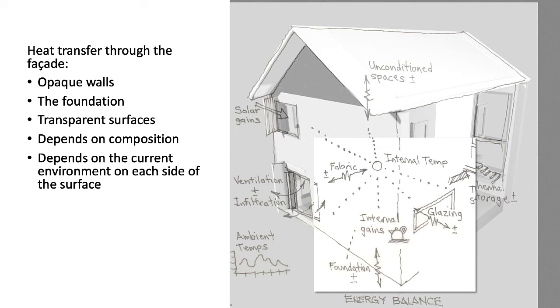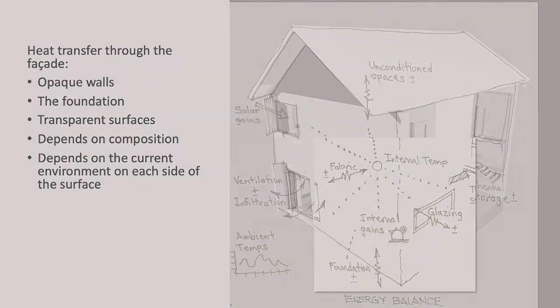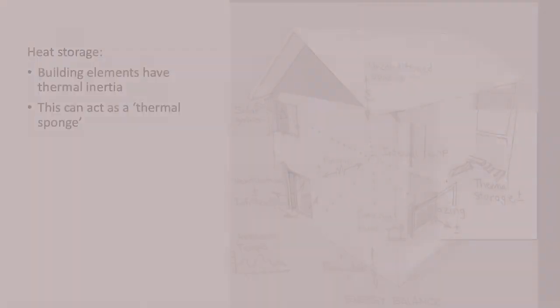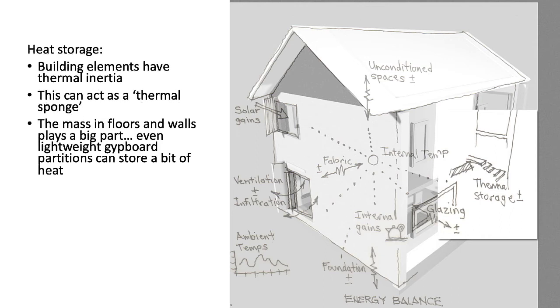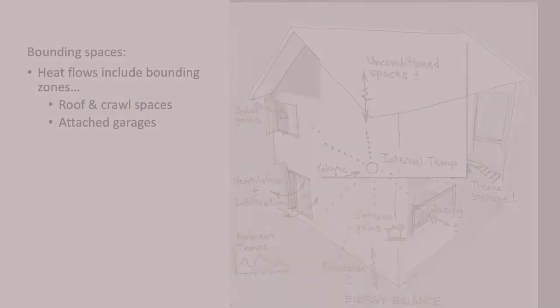The next aspect of energy balance is heat storage. Fabric of the building has a thermal inertia and thus acts as a thermal sponge. If we inject a lot of heat into a space, it does not instantly get hot. And if a heater turns off, the room does not instantly cool off. Thus, an energy balance needs to include heat storage in order to account for these observations.